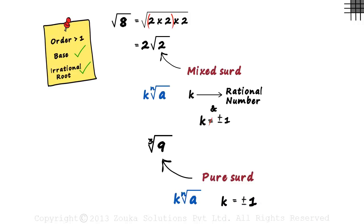But wait! Observe the first example, root eight. For root eight, k is equal to one. It's of this form, hence it's a pure surd. So we wrote a pure surd as a mixed surd.